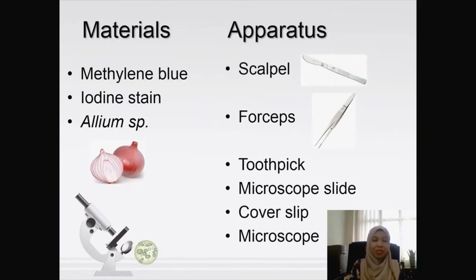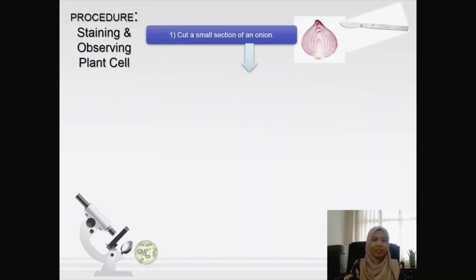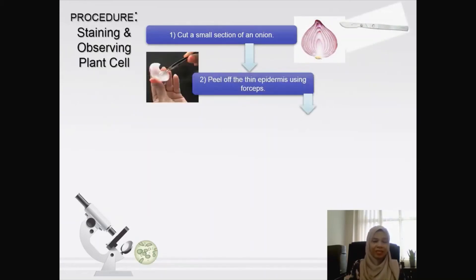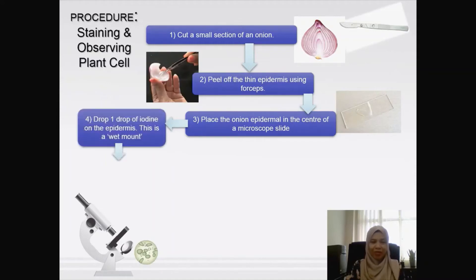For the procedure of staining and observing plant cells: first, cut a small section of an onion and peel off the thin epidermis using forceps. Place the onion epidermis in the center of a microscope slide and stain the cells by adding a drop of iodine on the epidermis. At this point, the slide will be known as a wet mount.